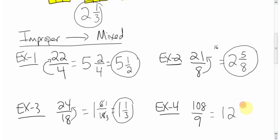So there's nothing left over, you don't put 0 over 9, you just leave it. The answer is just 12.